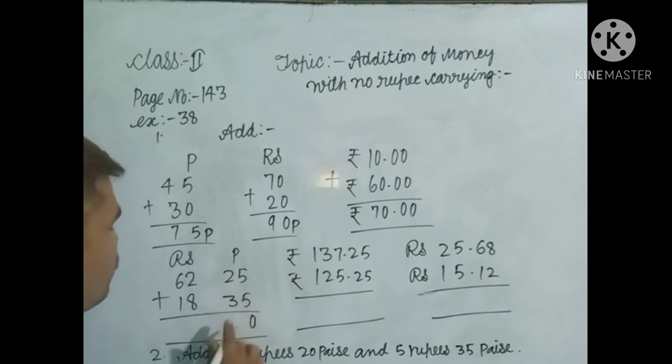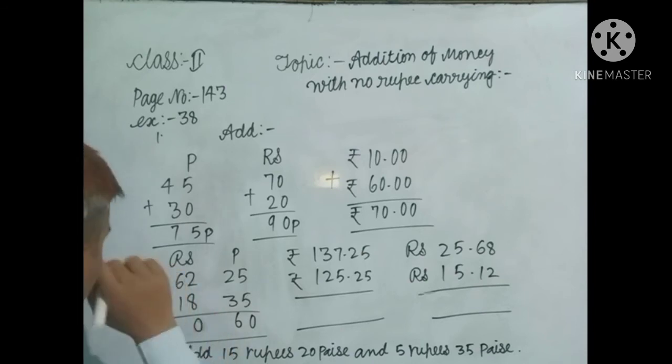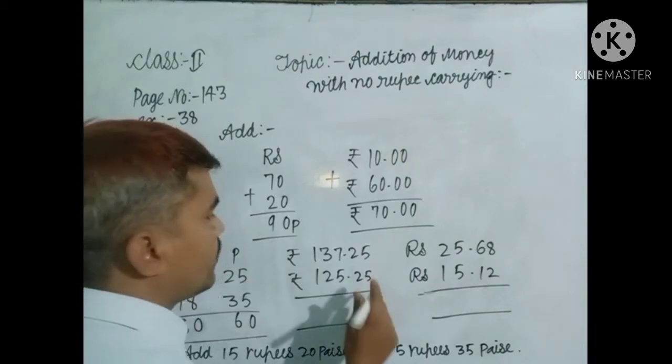Now here 5 plus 5, 10. 3 plus 2, 5, 1, 6. 8, 2, 10. That means 80 rupees, 60 paise.